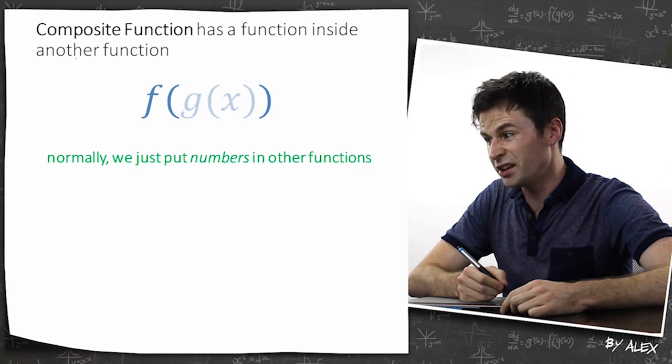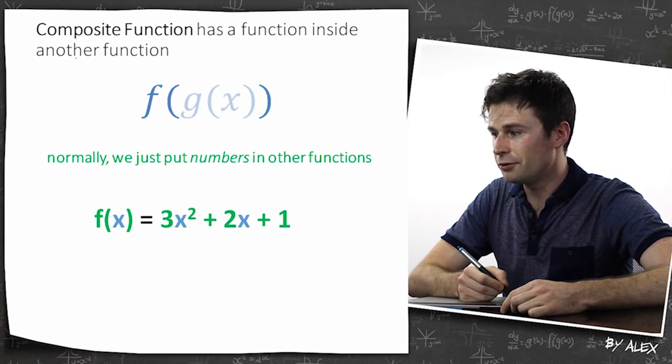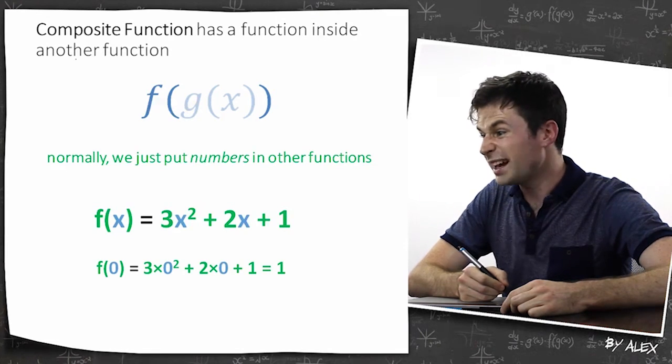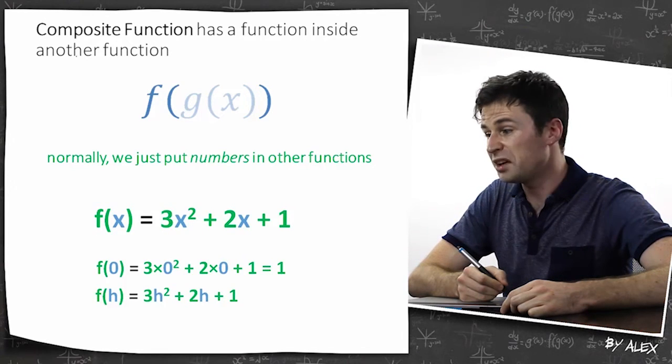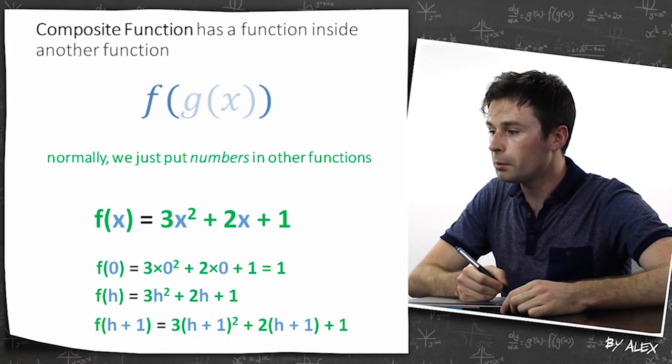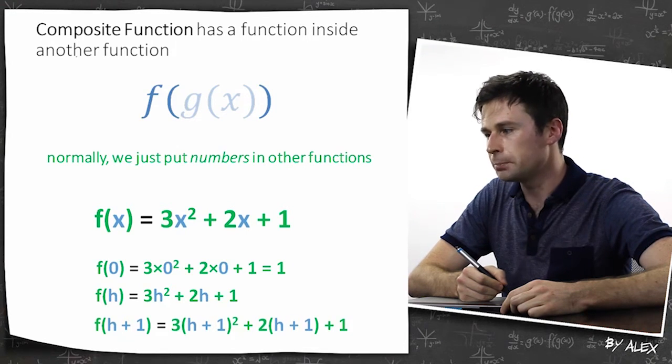Normally we just put numbers in other functions, so if you've got f of x equals this stuff over here, f of 0 would be replacing all the x's with 0, f of h would be replacing all the x's with h, and f of h plus 1 would be replacing all the x's with h plus 1.